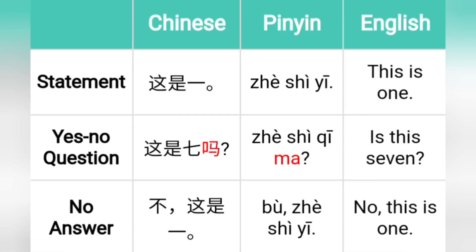The second example, where we answer no: the statement is 'this is one' — 'Zhè shì píngguǒ.' The yes-no question is 'is this seven?' — 'Zhè shì píngguǒ?' The no answer is 'Bù — Zhè shì píngguǒ,' meaning 'no, this is one.'